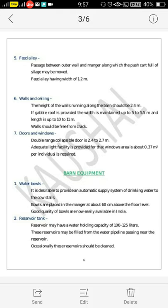A number of equipment items are required for dairy barns. First, water bowls; second, reservoir tank; and third, the stanchion chain. The water bowls — it is desirable to provide an automatic water supply system to the cow stalls. These water bowls are placed in the manger at about 60 cm above the floor level. Good quality bowls are now easily available in India. The second equipment is the reservoir tank, used as a replacement for water bowls generally in stanchion barns. These reservoirs may have a water holding capacity of 100 to 125 litres and may be filled from a water pipeline passing near the reservoir. Occasionally, these reservoirs should be cleaned.